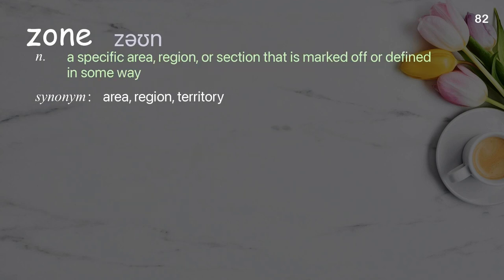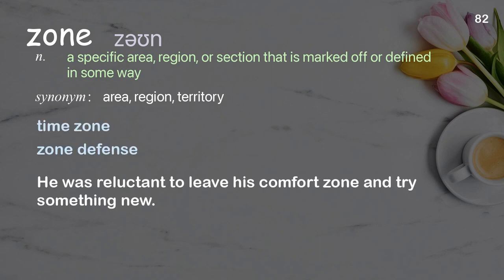Zone: a specific area, region, or section that is marked off or defined in some way. Examples: time zone, zone defense. He was reluctant to leave his comfort zone and try something new.